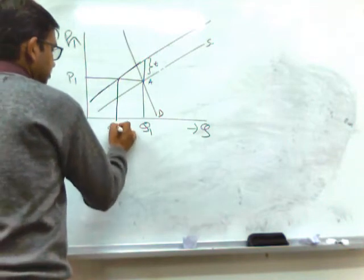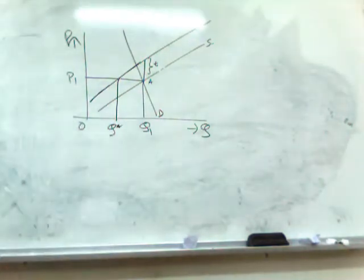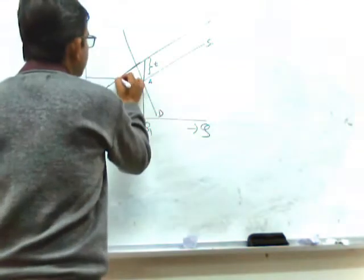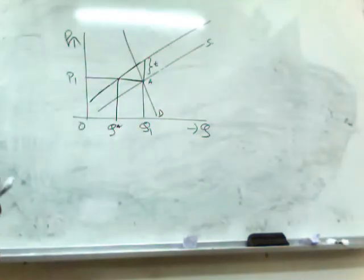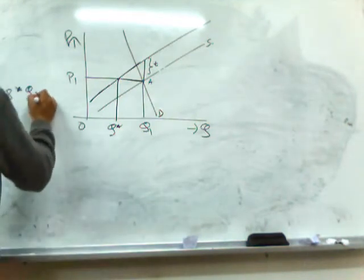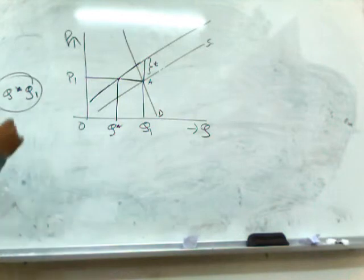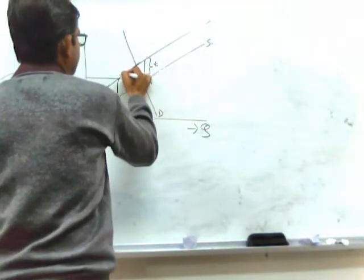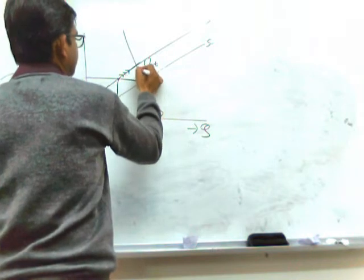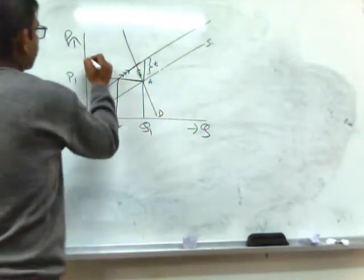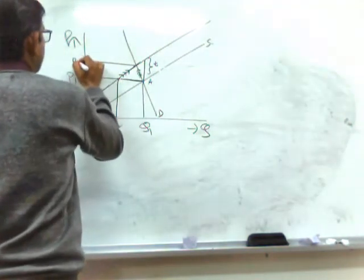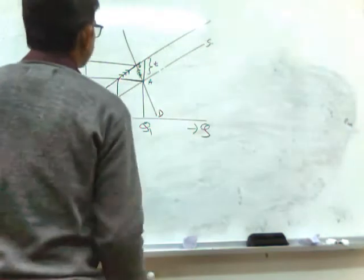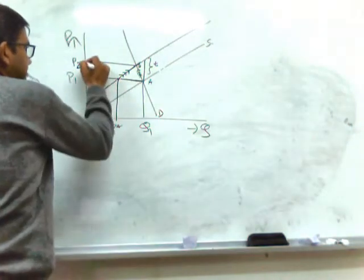Initially the market is subject to an excess demand situation to the extent Q*Q1. Due to this excess demand, price will start to rise. Once the price starts to rise, there will be extension of supply and contraction of demand. The new market equilibrium will be at point B, and P1P2 is the increase in price due to indirect taxation.